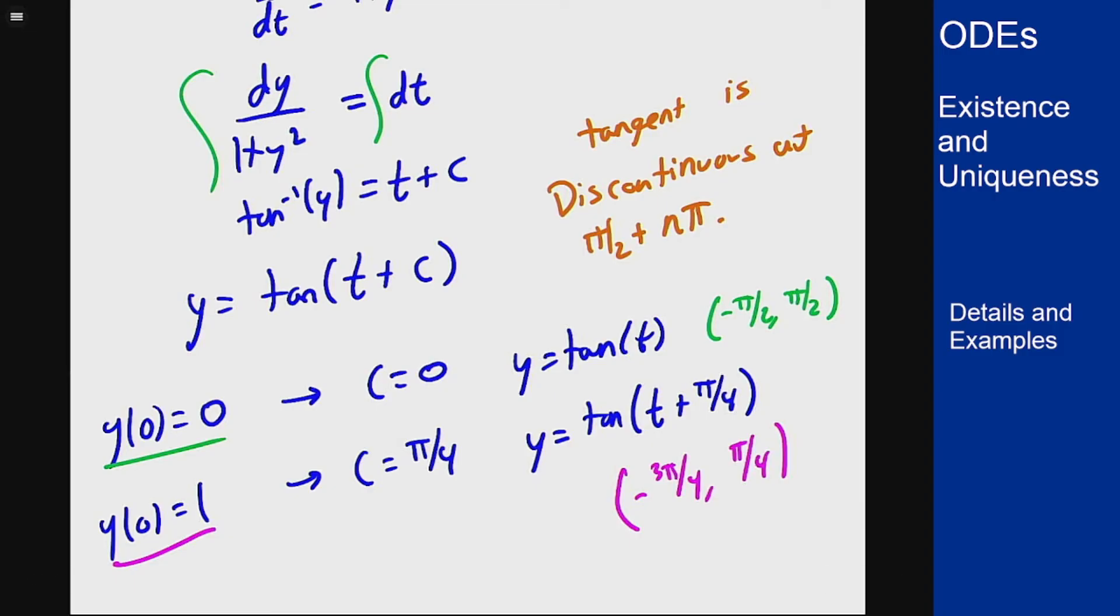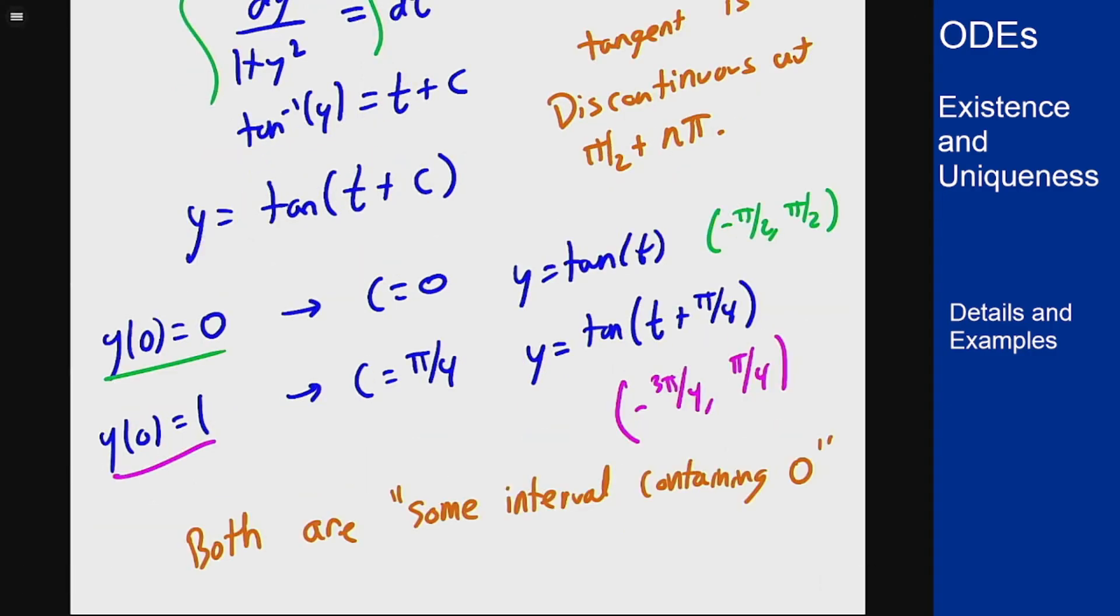Even beyond that, we see that both of these intervals satisfy the idea of being some interval containing 0. So we haven't broken the theory here. The theory still works. It just has limitations and can't tell us more than some interval around 0 in this case. In particular, knowing the t value alone doesn't specify the interval. The t and y value would specify the interval, but it requires being able to solve the equation to work that out.